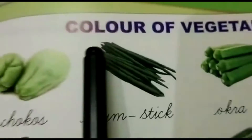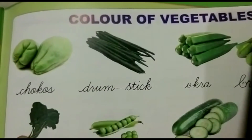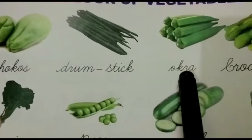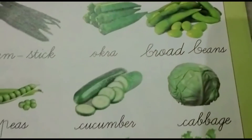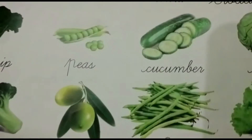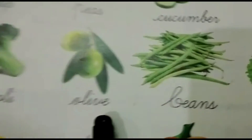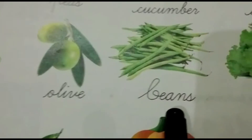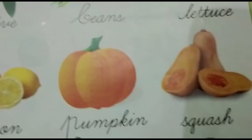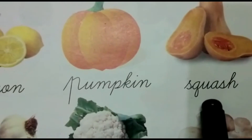Okay children, once again listen — colors of vegetables: chokos, drumstick, okra, broad beans, turnip, peas, cucumber, cabbage, broccoli, olive, beans, lettuce, capsicum, lemon, pumpkin, squash, radish, garlic, cauliflower, mushroom.